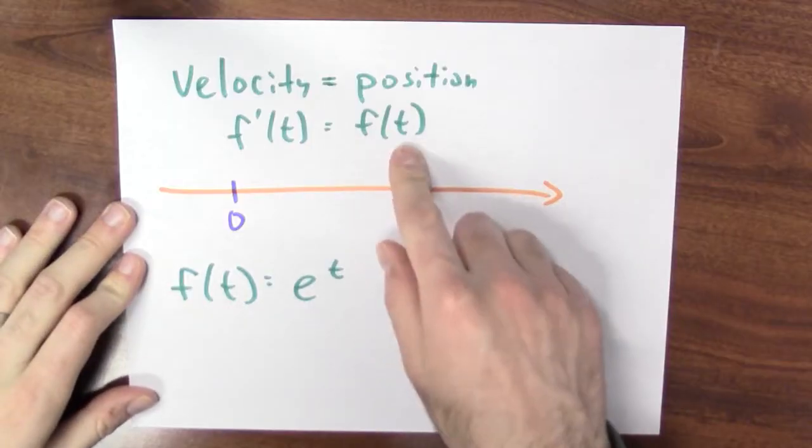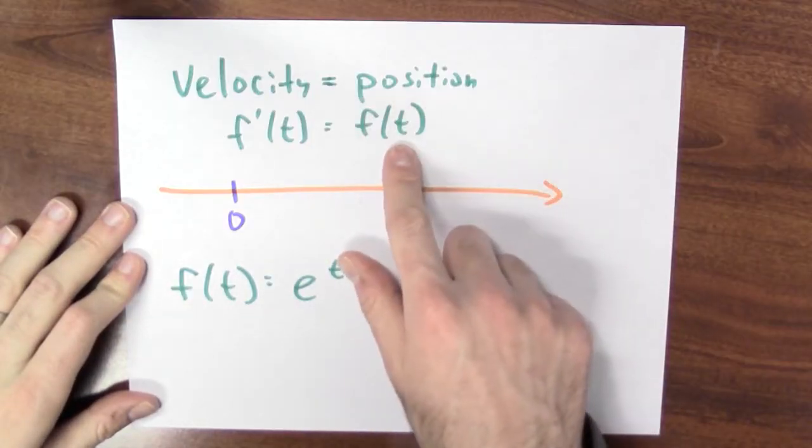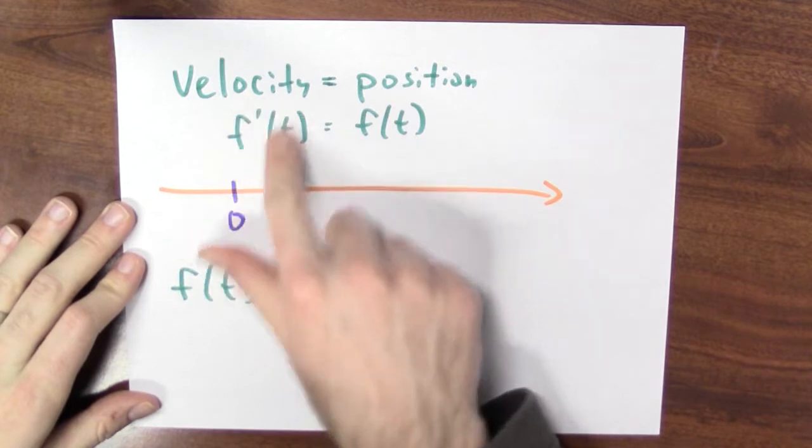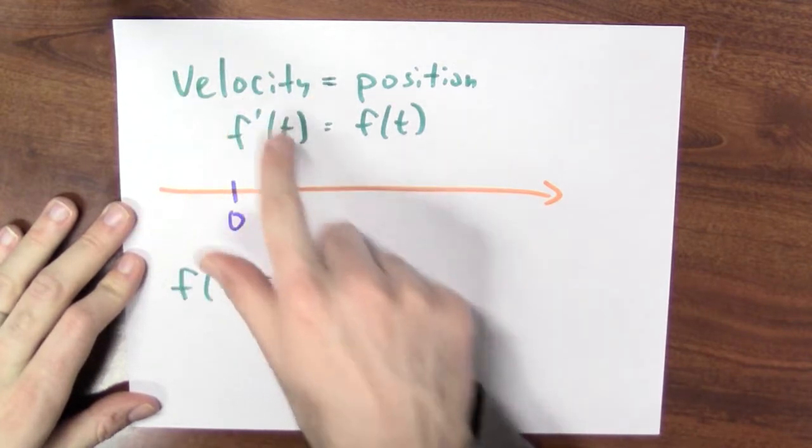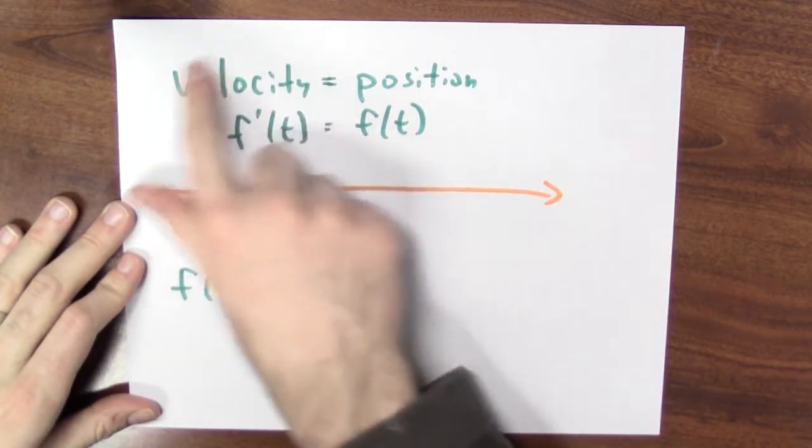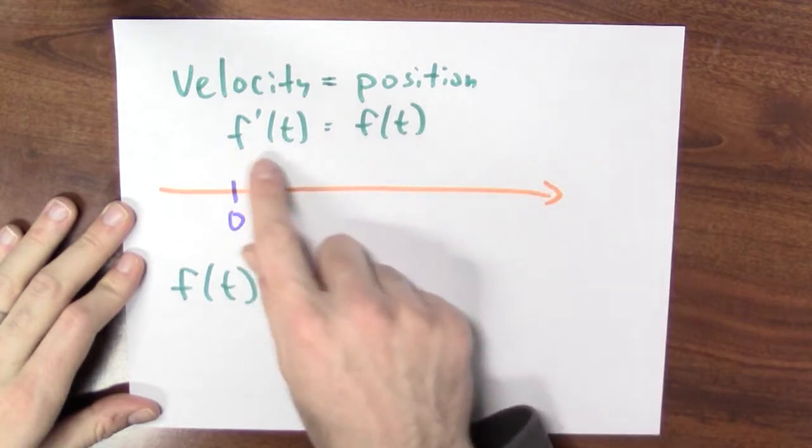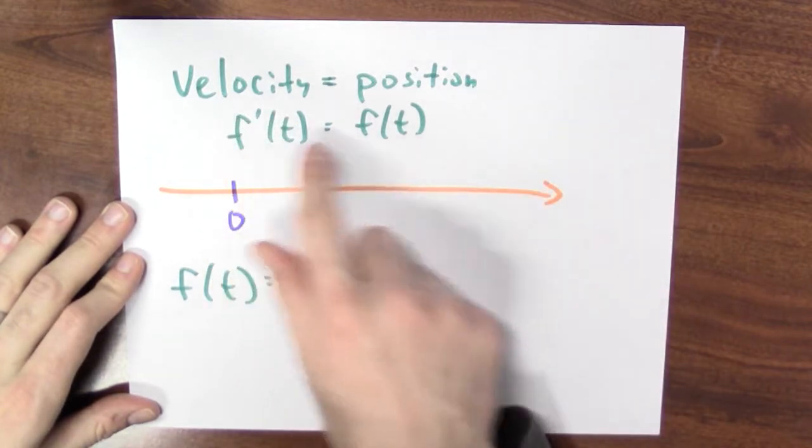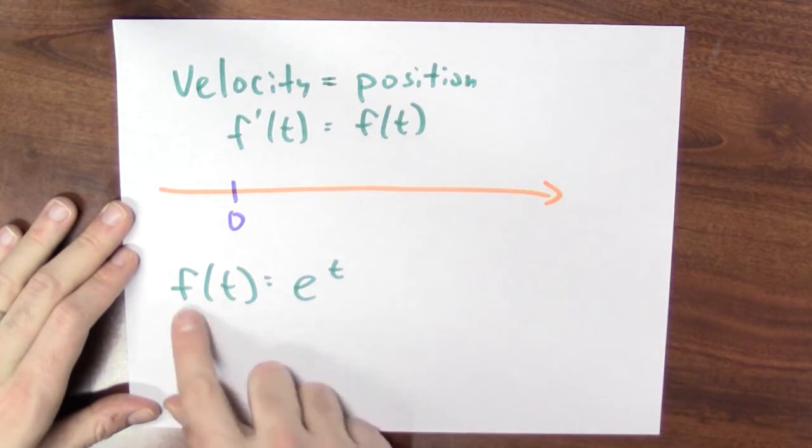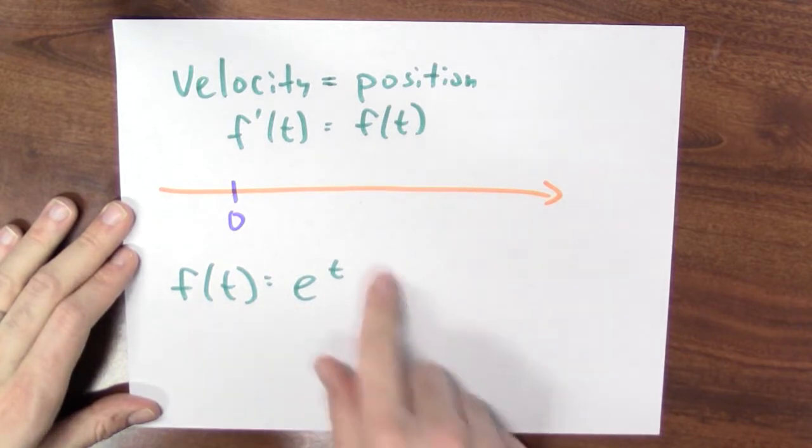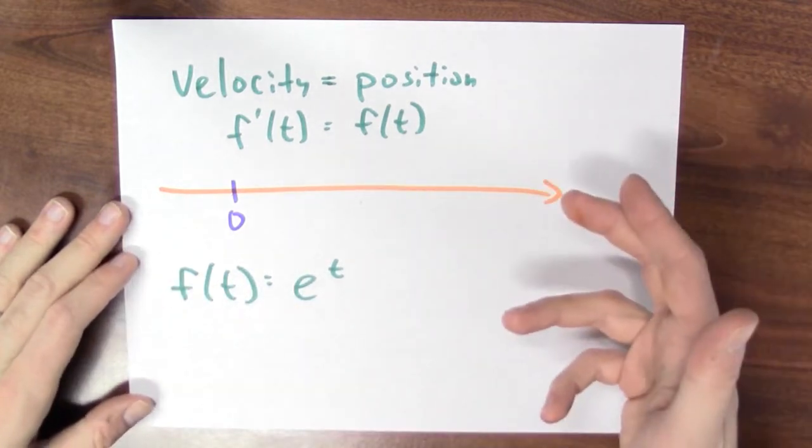If f of t is my position at time t, then f prime of t, the derivative of f of t, is my velocity at time t. So saying that velocity equals position is just saying I've got some function whose derivative is equal to itself. And we know an example of that. f of t equals e to the t is one example of such a function.